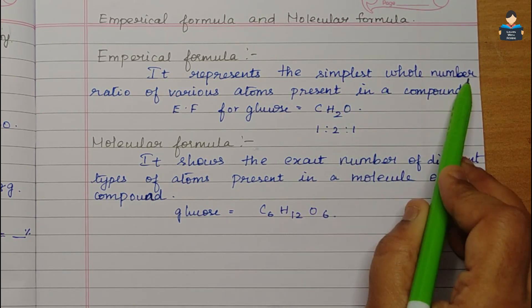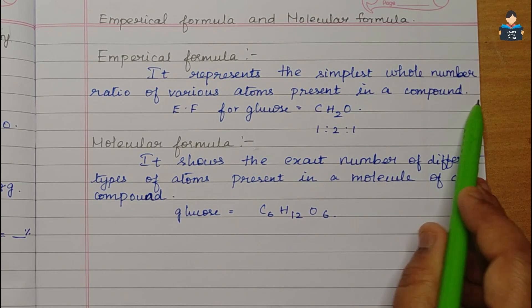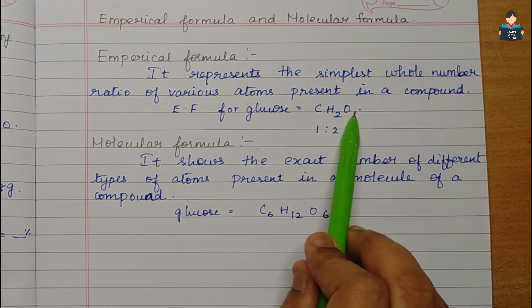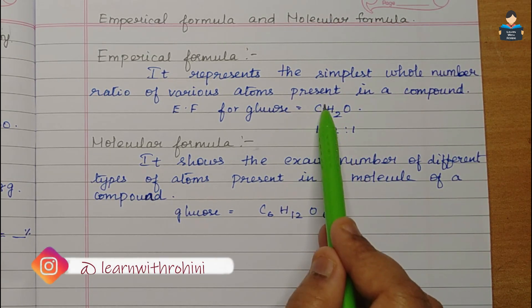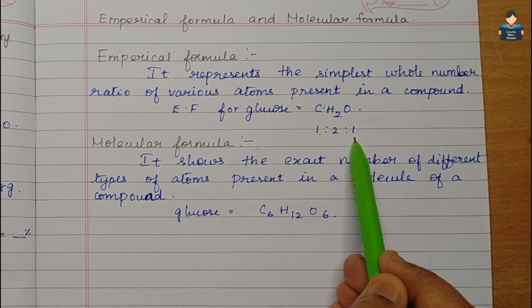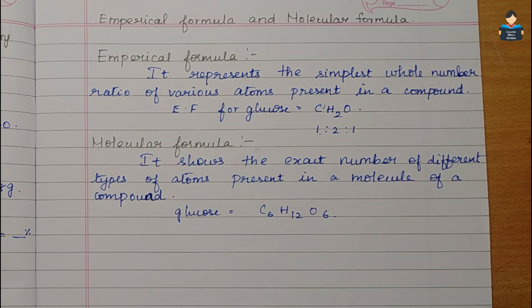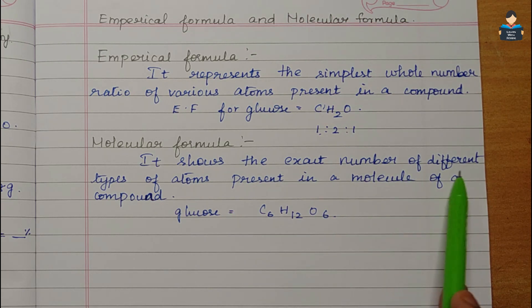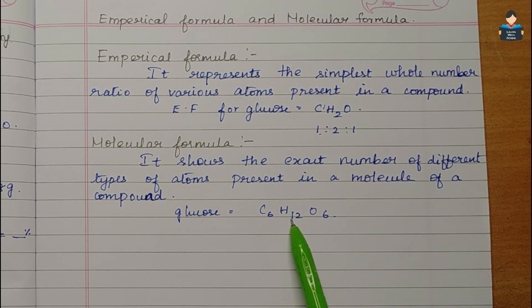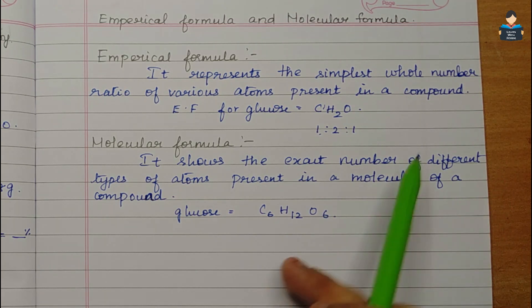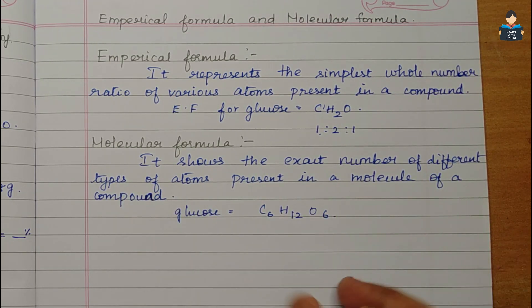So the simplest whole number ratio of various atoms present in glucose gives the empirical formula CH₂O. The molecular formula C₆H₁₂O₆ tells us the exact number: 6 carbon atoms, 12 hydrogen atoms, and 6 oxygen atoms present in one glucose molecule. That is the molecular formula.